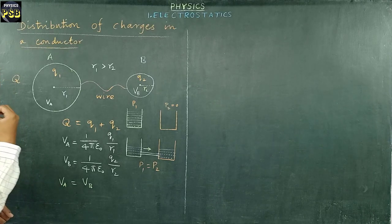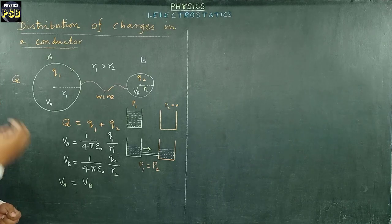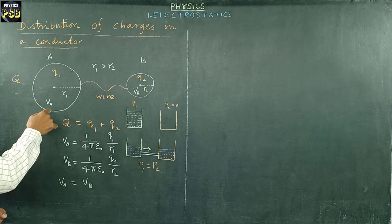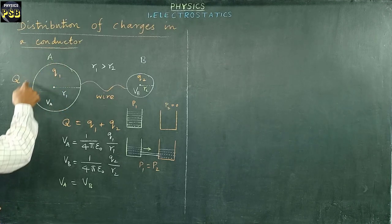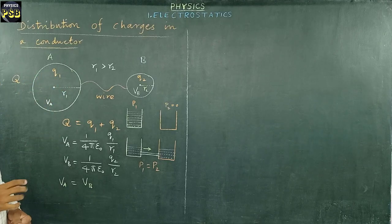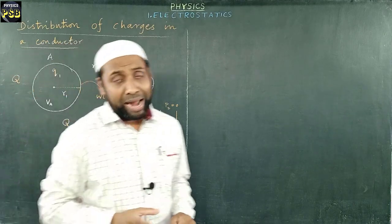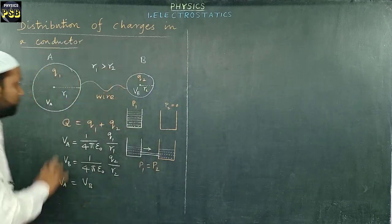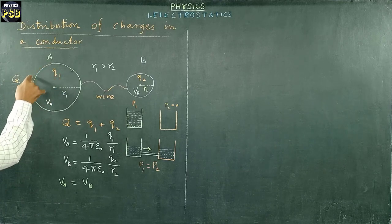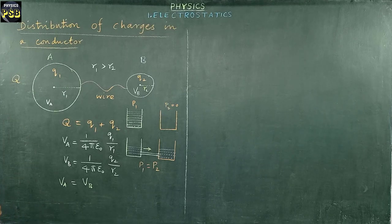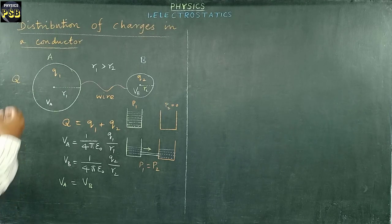When we supply charge to an object, the charges distribute and accumulate at the surface of the object — you will find no charge at the center. This holds good for both hollow and solid objects. The charges accumulate at the surface irrespective of the type of conductor.